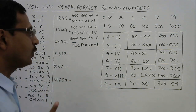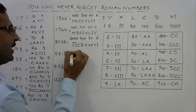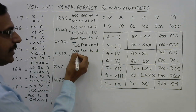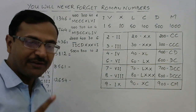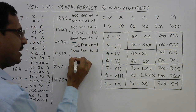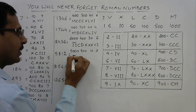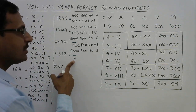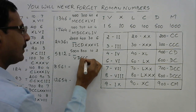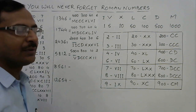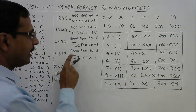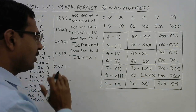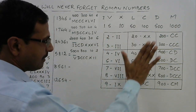For 5812: 5000 is V with a bar (V̅), 800 is DCCC, 10 is X, and 2 is II — giving V̅DCCCXII. You don't need to remember anything except the main table, which is very logical if you watch carefully.